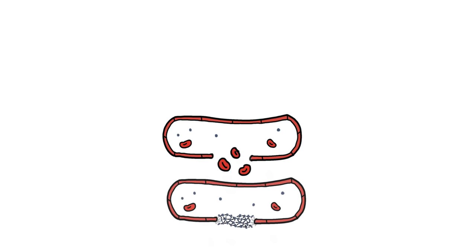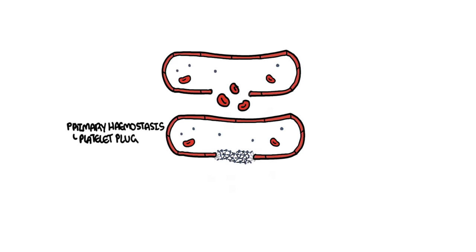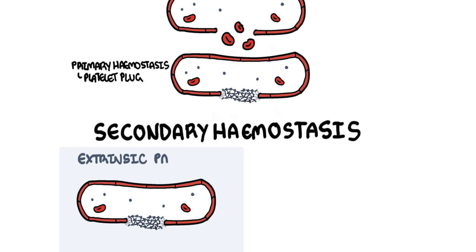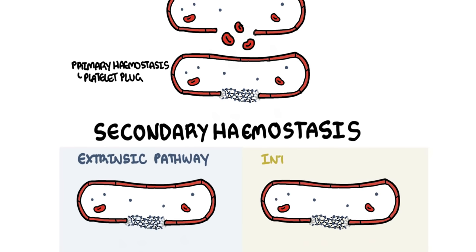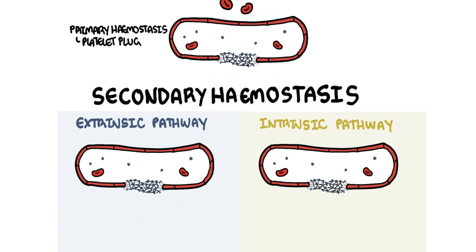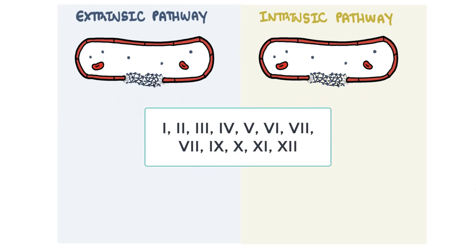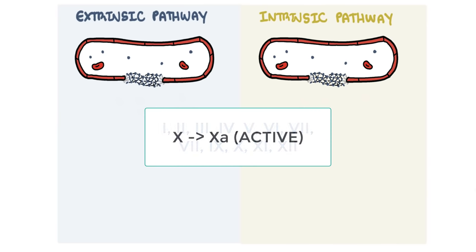Hemostasis is divided into primary hemostasis, which involves platelet plug formation, and secondary hemostasis, which is the coagulation cascade. The classic coagulation cascade is divided into the extrinsic pathway and the intrinsic pathways, both of which lead to the common pathway. Clotting factors are shown as Roman numerals, and a numeral followed by the letter 'a' represents an active clotting factor. For example, factor 10 becomes factor 10a, with 10a being the active factor.